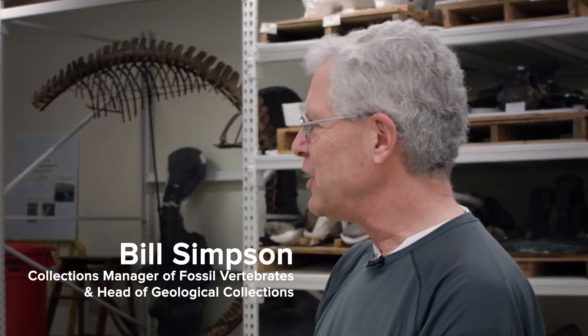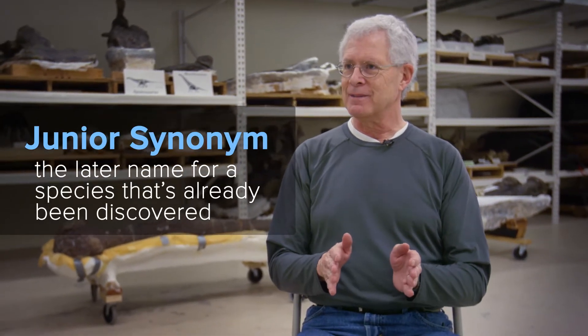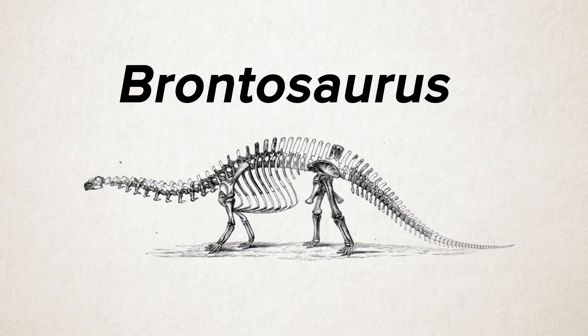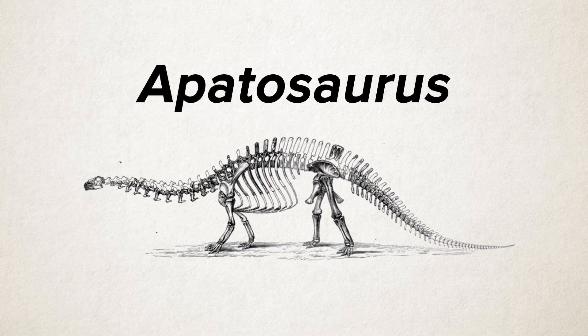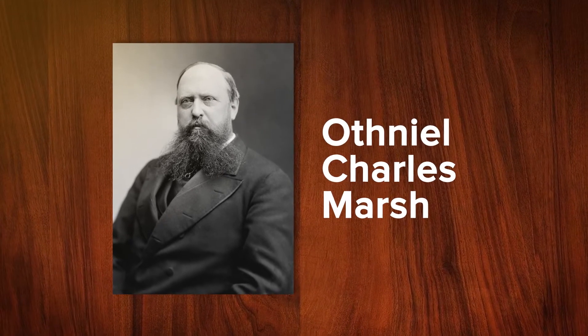Brontosaurus is a name that we all grew up with, but actually since 1903 has been regarded by vertebrate paleontologists as the junior synonym of Apatosaurus. Apatosaurus is what most of us consider to be the correct name for the animal that we all know as Brontosaurus. Brontosaurus was a sauropod dinosaur described in 1879 by Othniel Charles Marsh at Yale University.